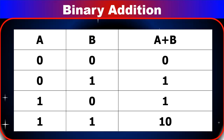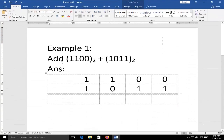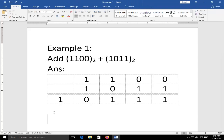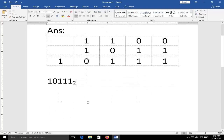Example of binary addition: add 1100 with 1011. Starting from the right: 0 + 1 = 1; 0 + 1 = 1; 1 + 0 = 1 (no carry needed here — write 1 carry 1); 1 + 1 = 10, write 0 carry 1. So the answer is 10111 (base 2).